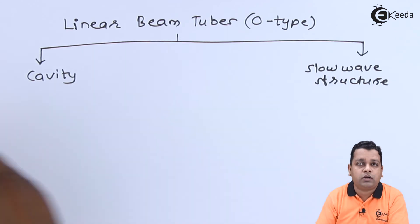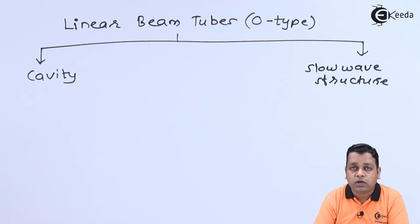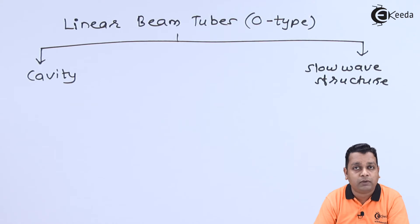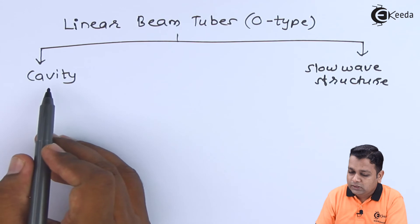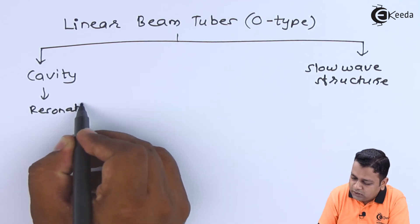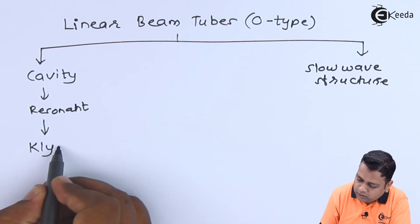The slow wave structure acts as a kind of attenuator; the intention is that the microwave should spend more and more time interacting with the electron beam so that there is greater energy exchange, benefiting the microwave especially for amplification. The slow wave structure will be addressed when we cover the traveling wave tube, whereas the cavities will be addressed for microwave tubes such as the two-cavity klystron as an amplifier and the reflex klystron as an oscillator. In the cavity branch, these are resonant cavities, and the family extends to microwave tubes named the klystron.